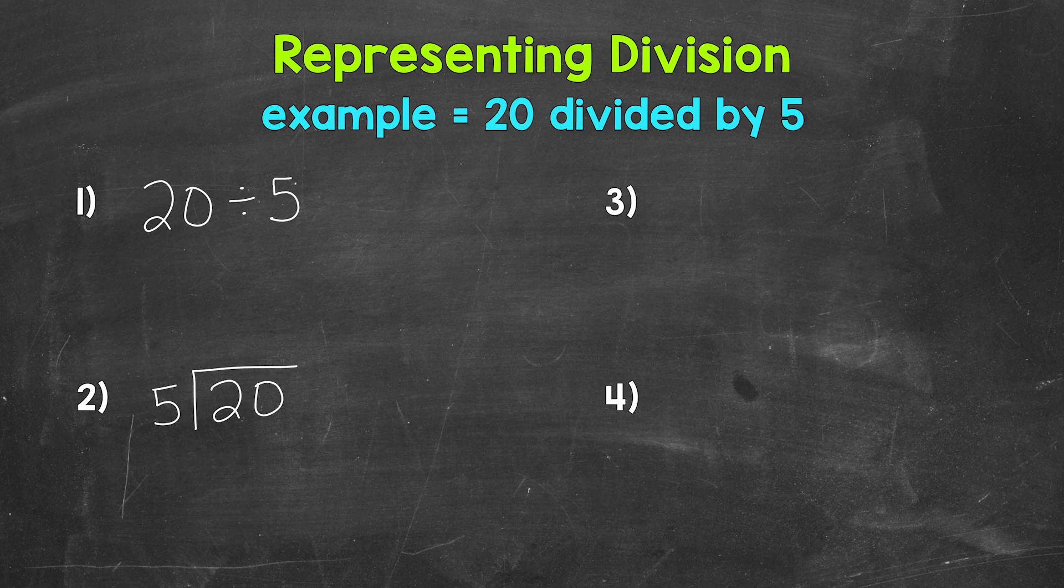Now when setting up a division problem like this, the dividend, the number being divided, always goes under the division bar, and then the divisor, the number you are dividing by, always goes on the outside of the division bar.